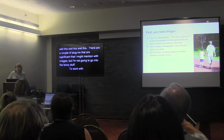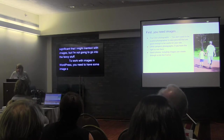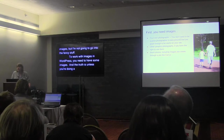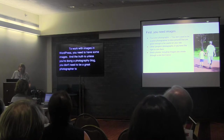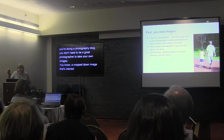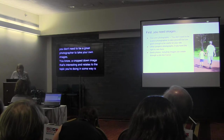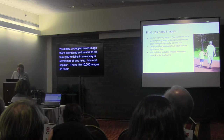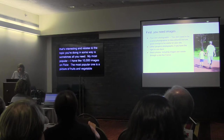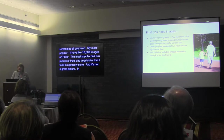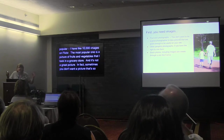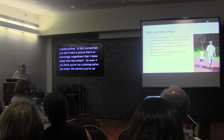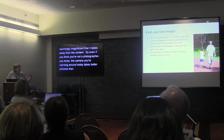To work with images in WordPress, you need to have some images. Unless you are doing a photography blog, you don't need to be a great photographer to take your own images. A cropped-down image that's interesting and relates to your topic is sometimes all you need. My most popular image — I have like 10,000 on Flickr — is a picture of fruits and vegetables I took at the grocery store. It's not a great picture. Sometimes you don't want a picture so stunningly magnificent that it takes away from the content. The camera you carry around today makes it easy. Consider taking your own pictures.